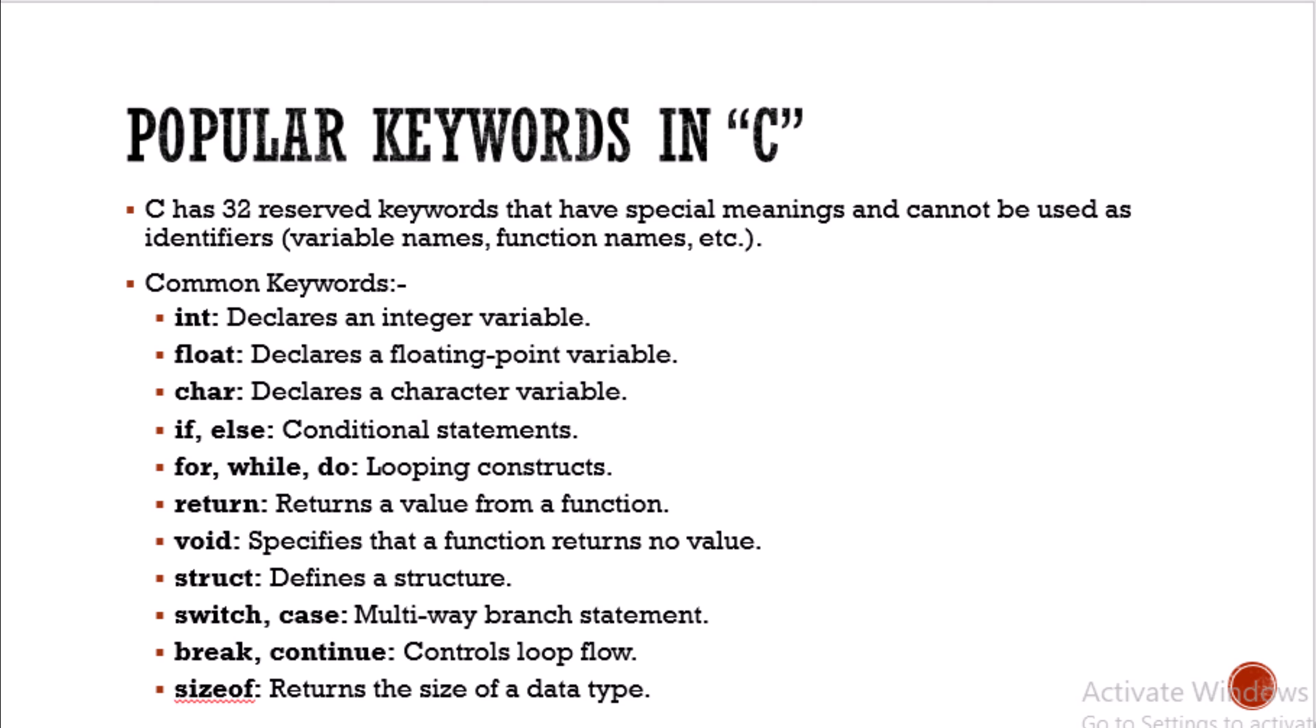There are 32 reserved keywords in C programming which are meant for specific things. We can't use these names for variables. For example, you can't write int equals 3 because int is a reserved keyword. Some common keywords are int, float, char, if, else, for, while, do, return, void, struct, switch, case, break, continue, sizeof.